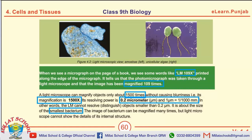The page which you are seeing is mostly selected for MCQs in the examination. If there is a microscope with a reading of 10^9x, it means it can magnify 10^9 times. A light microscope can magnify objects 1500 times, and without blurriness its magnification may be 1500x. The resolving power of a light microscope is 0.2 micrometer, and it is the size of the smallest bacterium.